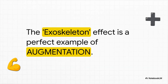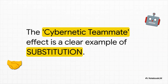Now we can start to map what we've learned onto this framework. The exoskeleton effect — giving consultants those coding superpowers — is a perfect example of augmentation. The AI enhanced their capabilities, letting them perform new and difficult tasks. And the cybernetic teammate effect, where one AI-powered person performs like a two-person team? That's a classic case of substitution — the AI provided an equivalent alternative to having a human collaborator right there with you.